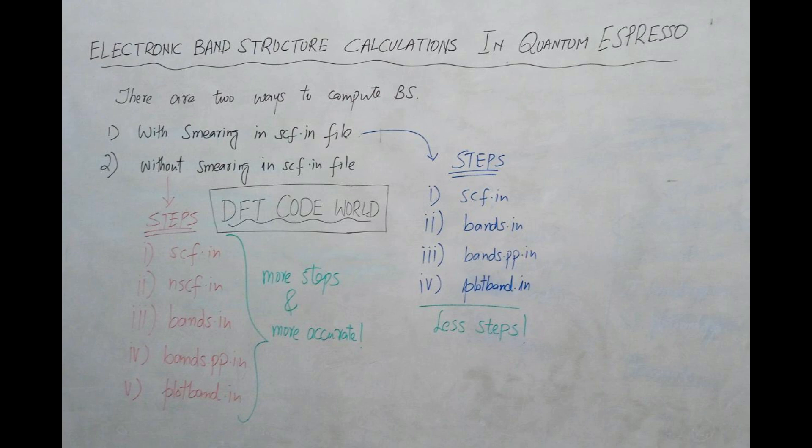The first method — with smearing in SCF.in — involves four steps. First, the SCF.in file with smearing is run with pw.x. Second, bands.in is run with pw.x, calculating bands along symmetry directions such as Gamma, L, W, and X points. Third is post-processing with bands.pp.in, and finally we plot the post-processed bands.